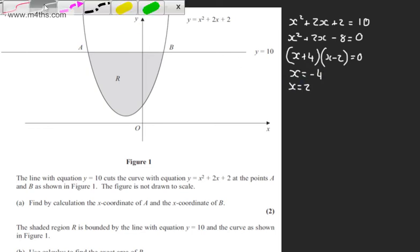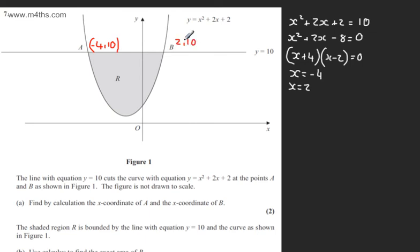So we can see now from our diagram that the x-coordinate of A is going to be minus 4, the y-coordinate is going to be 10. We're not asked for that but we have it anyway. Then with B we're going to have positive 2 comma 10. So for two marks, A is minus 4 and B is 2.